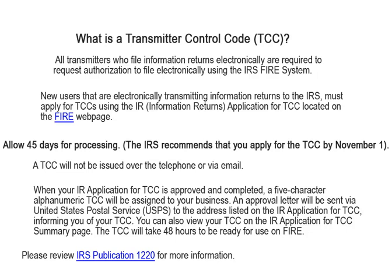What is the transmitter control code? All transmitters who file information returns electronically are required to request authorization to file electronically using the IRS FIRE System. New users that are electronically transmitting information returns to the IRS must apply for transmitter control codes using the information returns application located on the FIRE webpage. Allow 45 days for processing. The IRS recommends that you apply for the transmitter control code by November 1. The transmitter control code will not be issued by telephone or email.